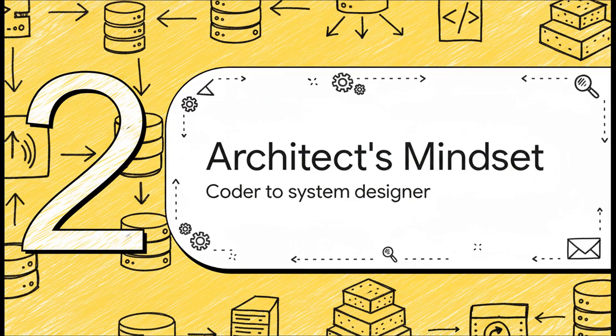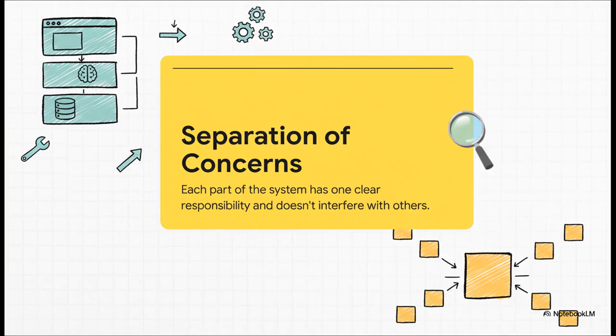So how do we get out of that chaos? Well, the answer isn't some new shiny programming language or a fancy framework. It's all about a fundamental shift in our mindset from just being a coder to becoming a system designer. And the absolute core of this new mindset is separation of concerns. Now, it sounds kind of fancy, but it's really simple.